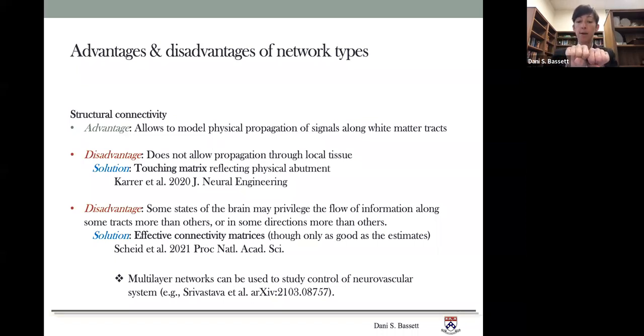So for example, when you have two gray matter areas that are next to one another and a signal could flow through the tissue, the structural connectivity may not show that connectivity. So one solution to that problem is to use what's called a touching matrix, which reflects the physical abutment of gray matter areas. And we've done that most recently in Carr et al in a Journal of Neuroengineering paper.